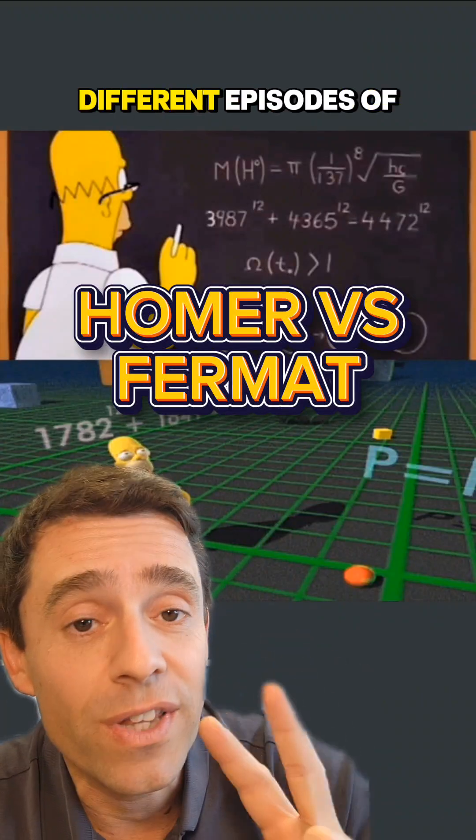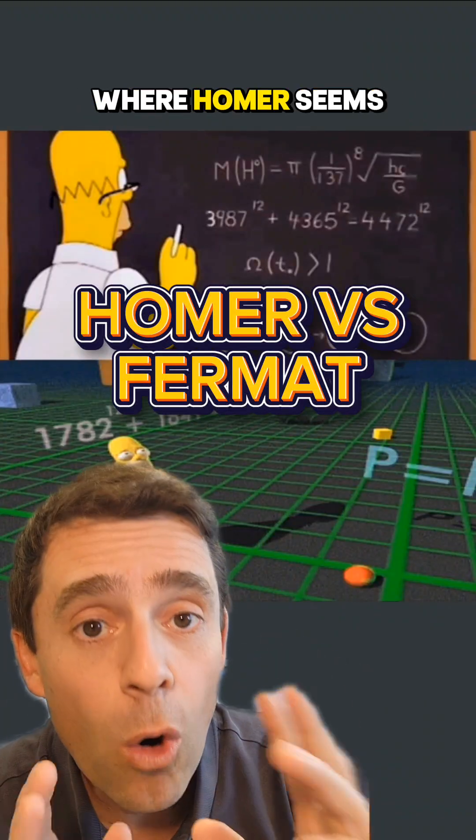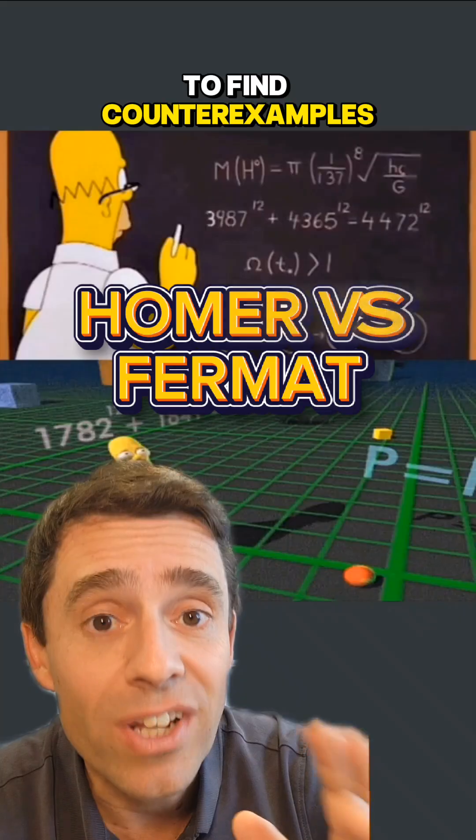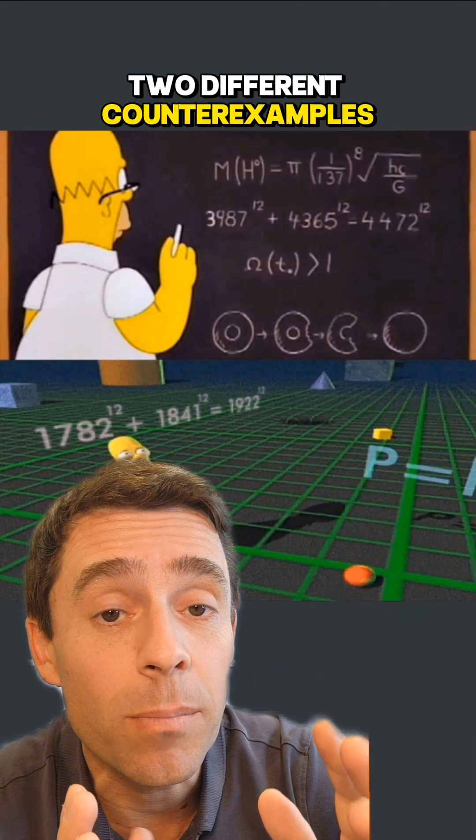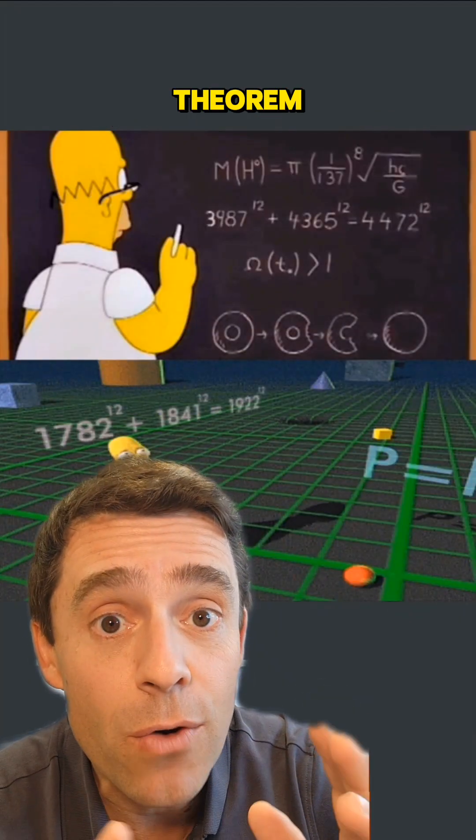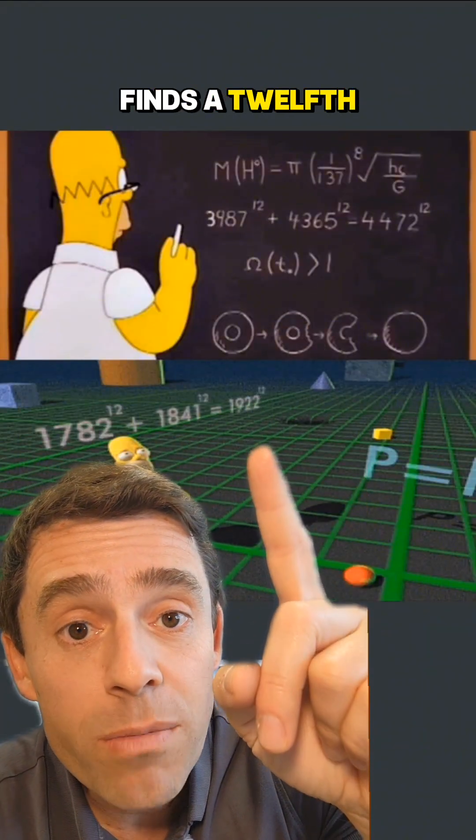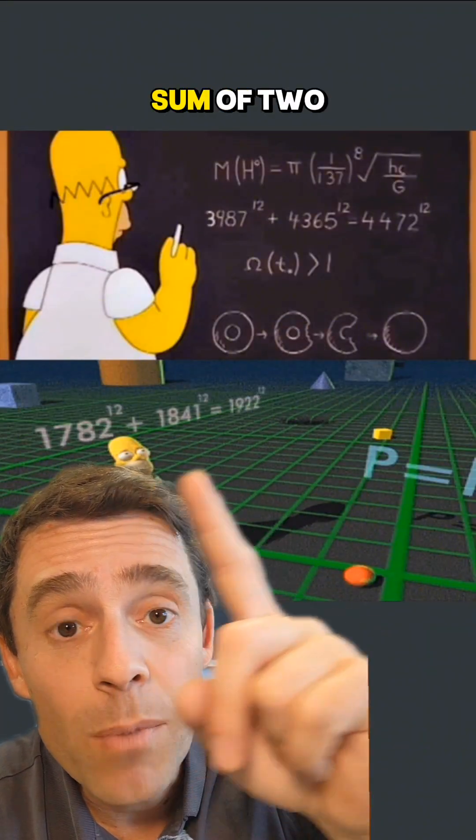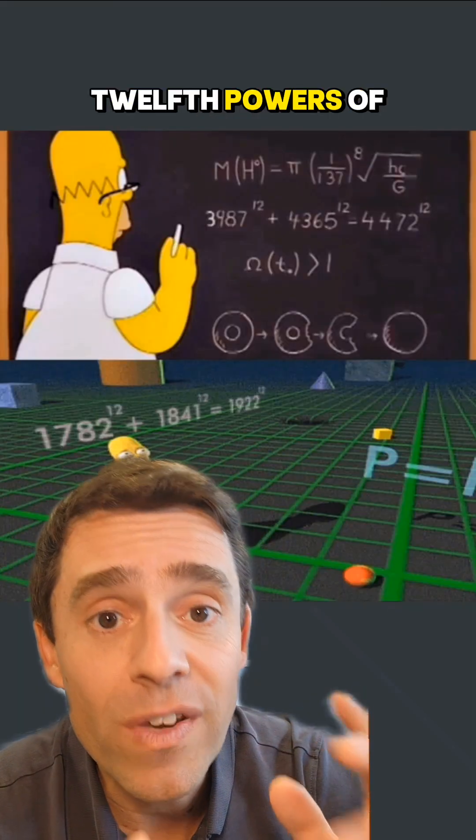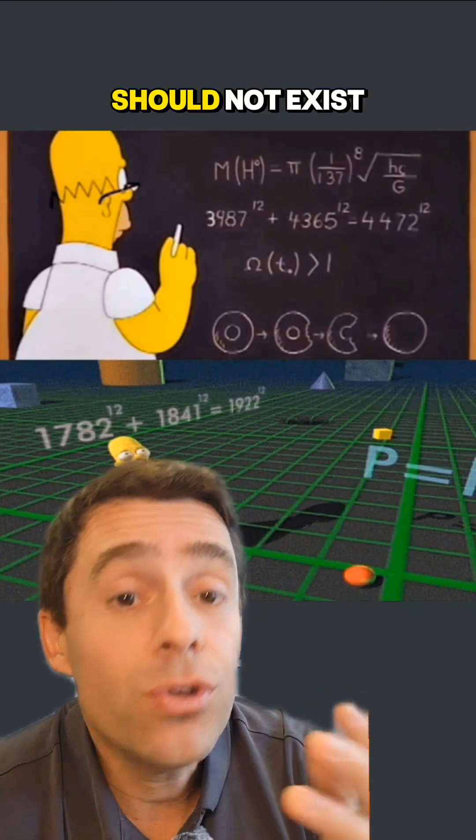There is not one but two different episodes of The Simpsons where Homer seems to find counterexamples, two different counterexamples, to Fermat's last theorem. That is, here and here, he finds a twelfth power of an integer that is the sum of two twelfth powers of integers, and those examples should not exist.